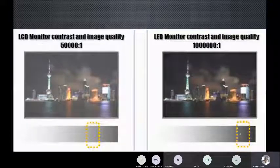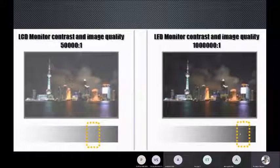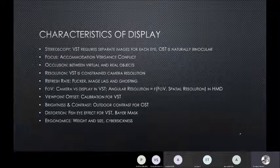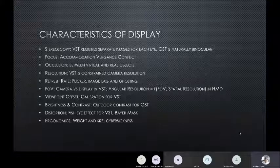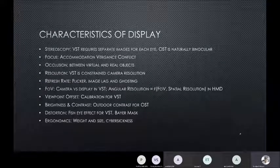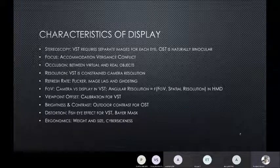LED and later OLED displays have a better contrast ratio, dimming range, and bigger color gamut display capacity than CRT or liquid crystal displays. At this point it is interesting to note how we characterize displays. There are several properties by which we can characterize them, including wider color gamut and higher contrast ratio. There are also other properties when looking at a wider range of displays, including head-mounted and handheld displays.